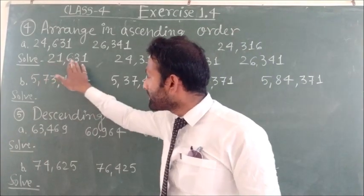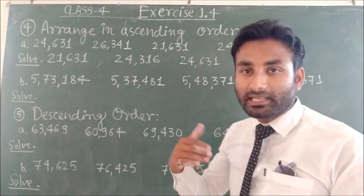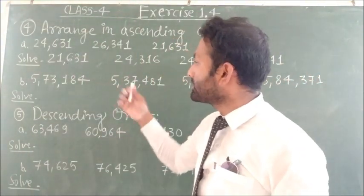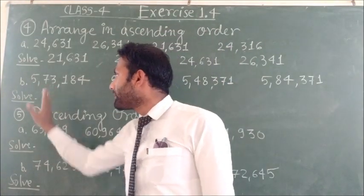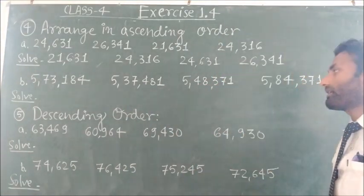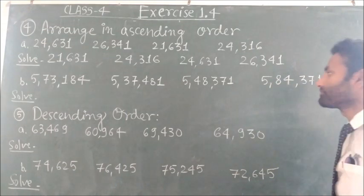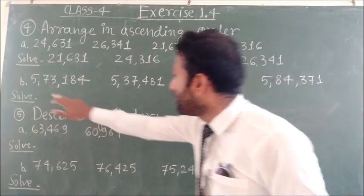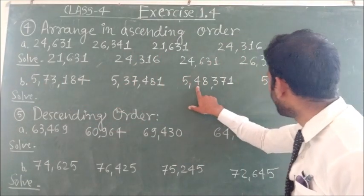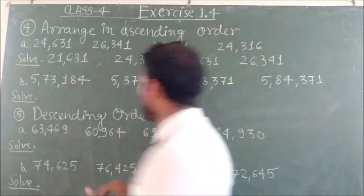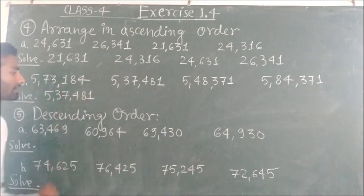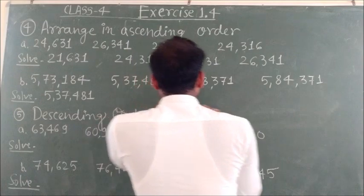Then 24,631, and the last number is 26,341. So in ascending form: 21,631, 24,360, 24,631, and 26,341. Next question: 5,73,184, 5,47,481, 5,48,371, and 5,84,371. The smallest number is 5,47,481, so first number is 5,47,481.